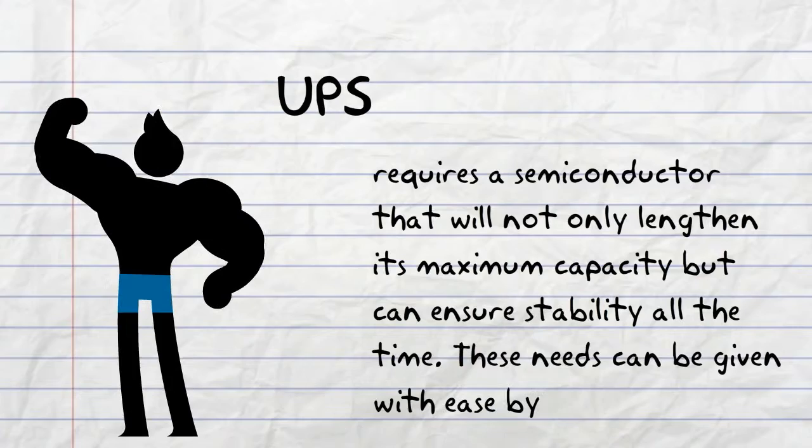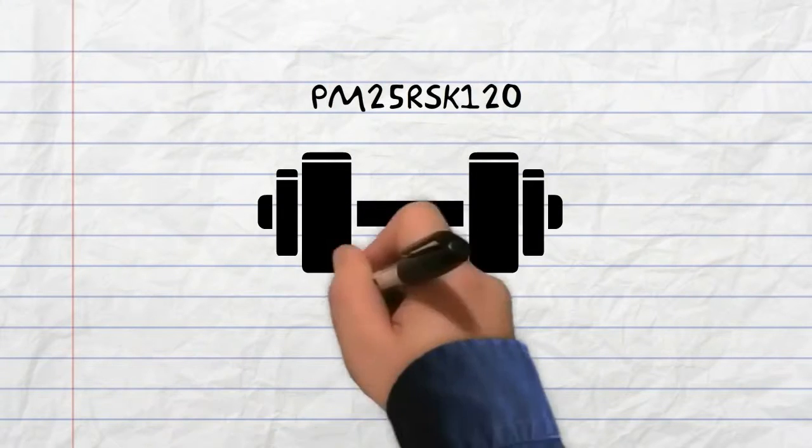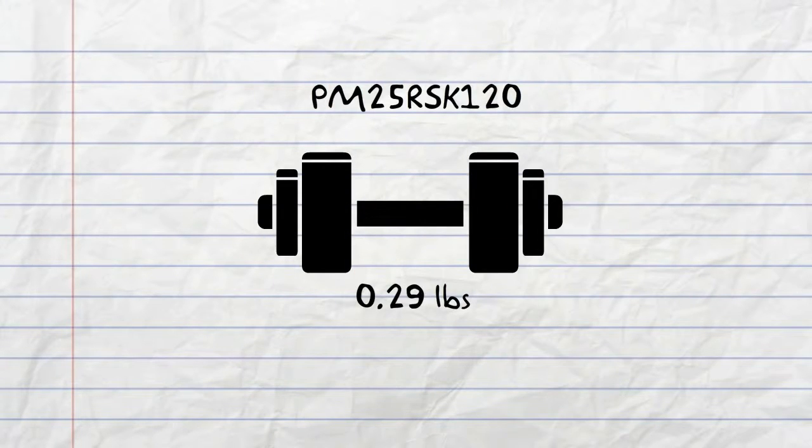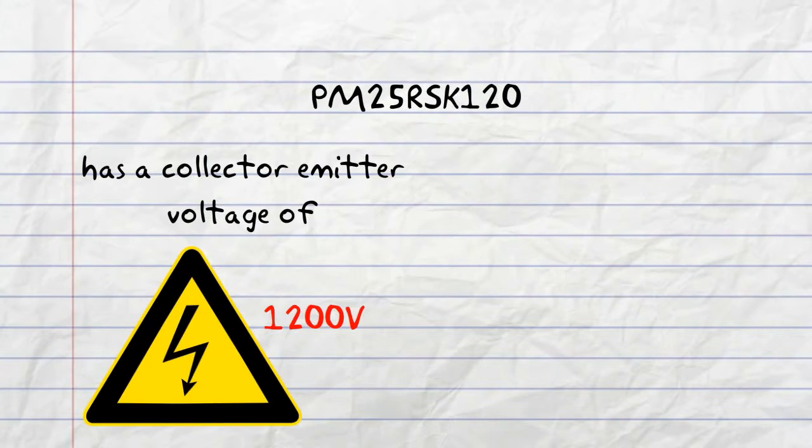These needs can be given with ease by PM25RSK120. With a weight of only 0.29 pounds, PM25RSK120 has a collector emitter voltage of 1200 volts and a collector current of 25 amps.